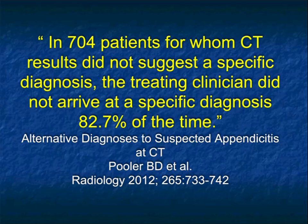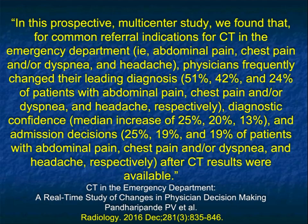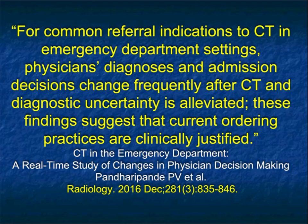A few years later, they wanted to redo the study looking at CT's impact, but instead of one institution, do it at multiple institutions so nobody could say it was a single institution bias. In this multi-center study, they looked at abdominal pain, chest pain, and headache. Physicians changed their diagnosis across all three, but especially in abdominal pain. Diagnostic confidence and admission decisions were all more accurate after CT was performed. Their conclusions were the same: these findings suggest that current ordering practices are clinically justified. We are doing the right thing — perhaps we're not using enough CT.